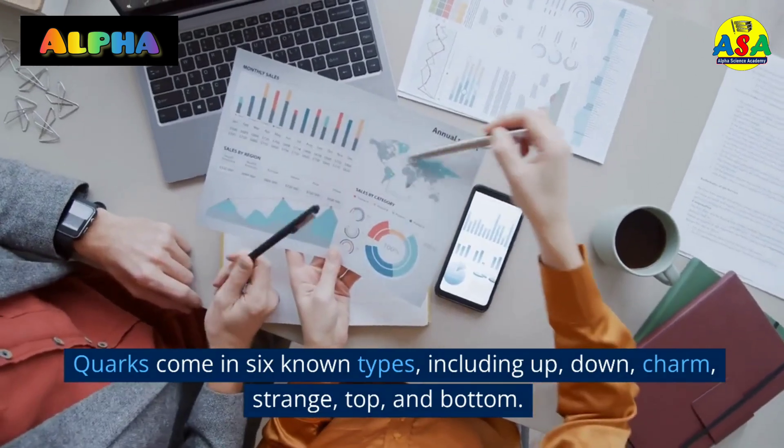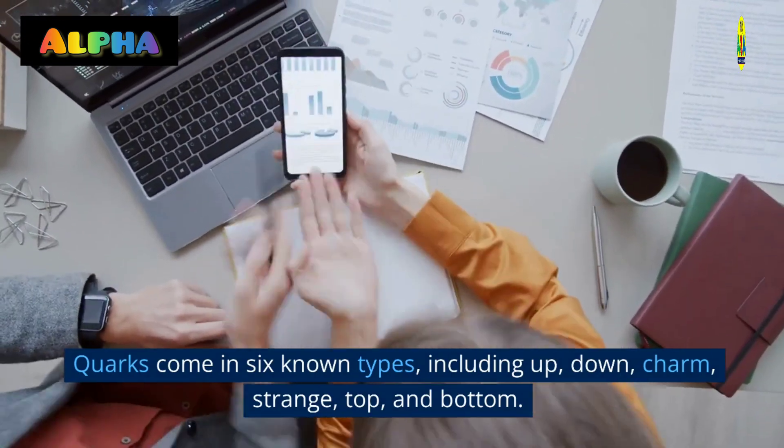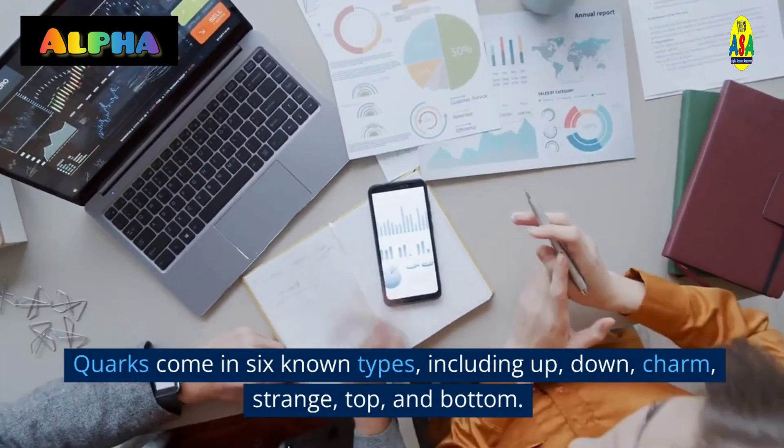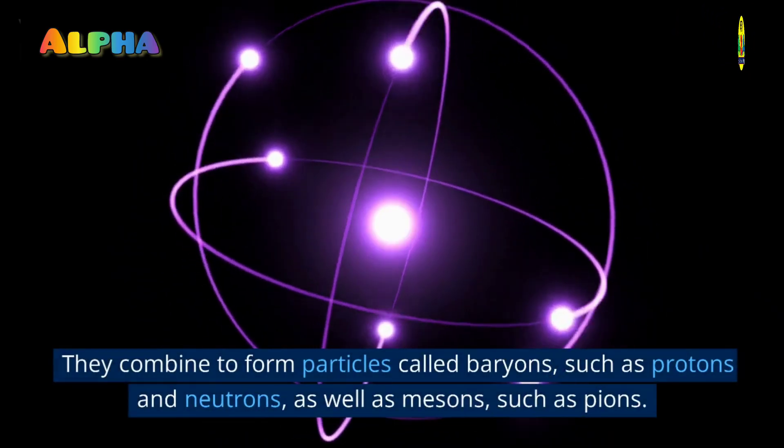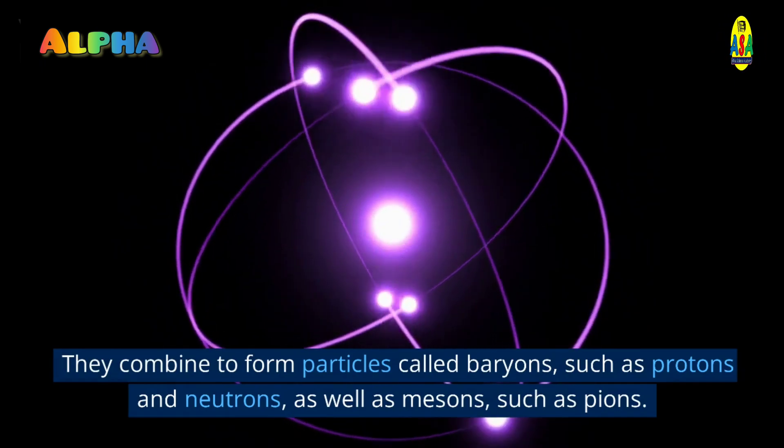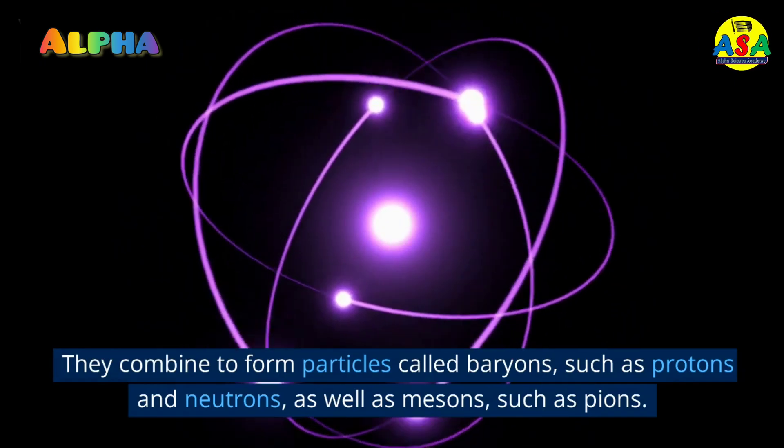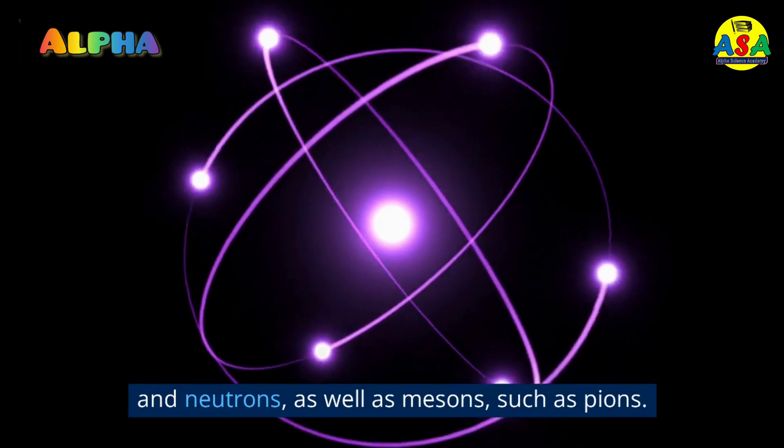Quarks come in six known types, including up, down, charm, strange, top, and bottom. They combine to form particles called baryons, such as protons and neutrons, as well as mesons, such as pions.